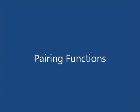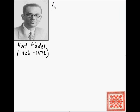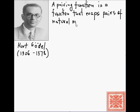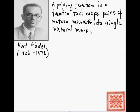We'll start with the notion of a pairing function. A pairing function is essentially a mapping device that allows us to take a sequence of numbers and map it into a single number — a tuple of numbers if you will. Formally speaking, the pairing function is a function that maps pairs of natural numbers into single natural numbers, going from the Cartesian product of N with itself into N.